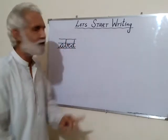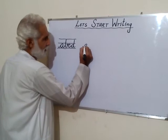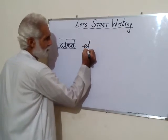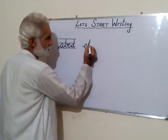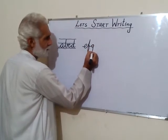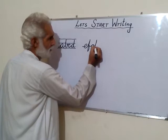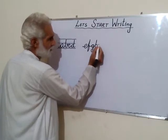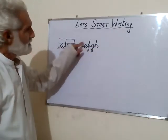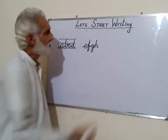Then we take another four: E, F, G, and H. We start with E, go up, come down, take a curve, then make G — go up, come down — and H. Look at the formation: center and top. Then I, J, K, L.